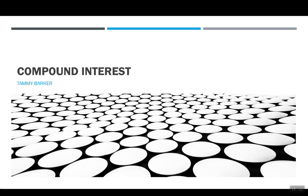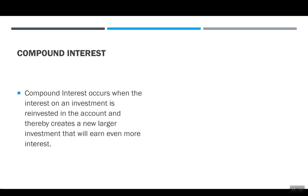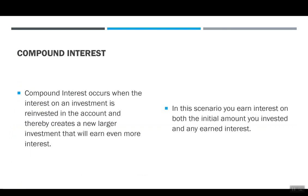Today we're going to talk about compound interest. Compound interest occurs when interest on an investment is reinvested in the account and thereby creates a new larger investment that will earn even more interest. In this scenario, you earn interest on both the initial amount you invested and any earned interest.